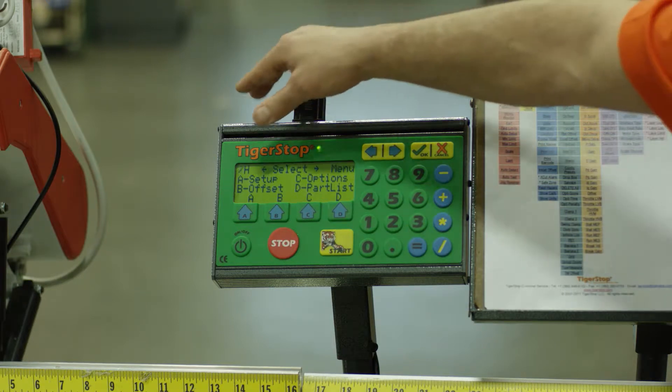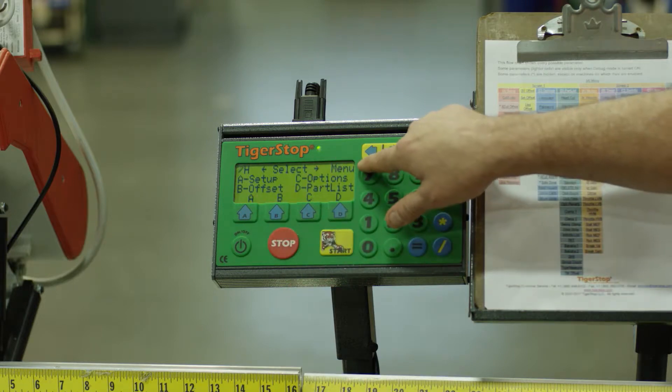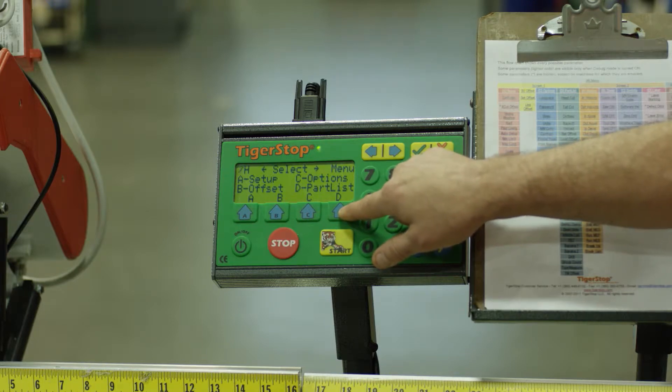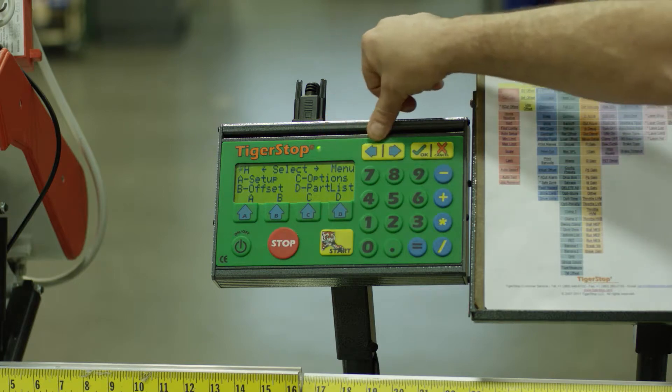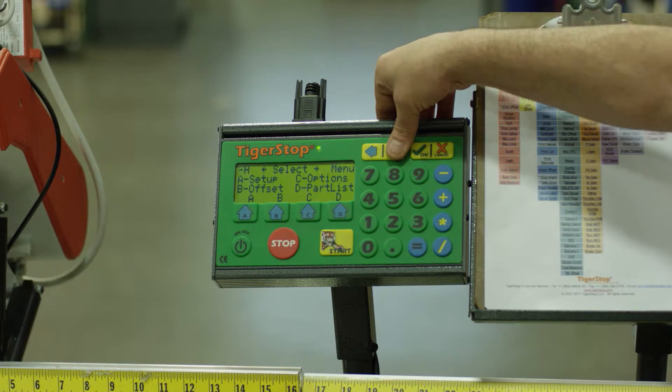Inside screen one is going to be your setup features, offsets under B, options under C, part list is where you're going to be using to get your cut list or part list or download. Corresponding with the left and right arrow buttons, I will now hit the right arrow button and go to screen two.